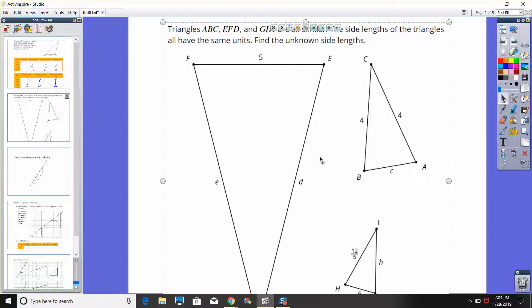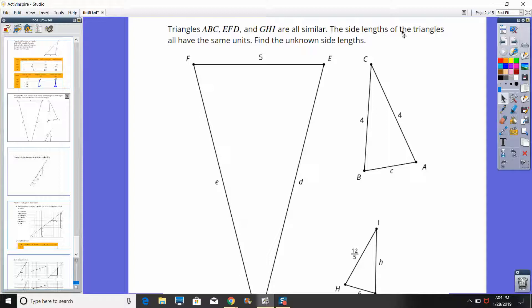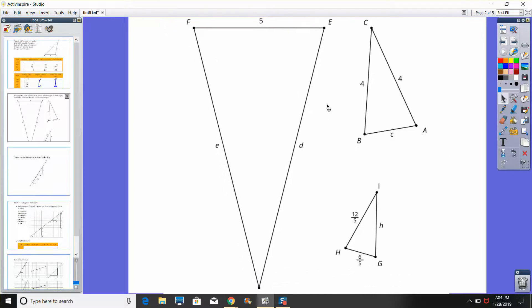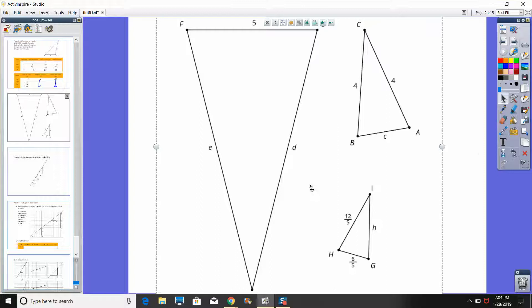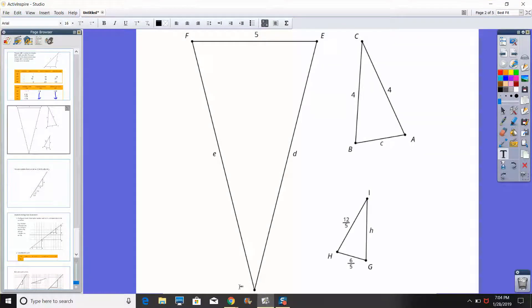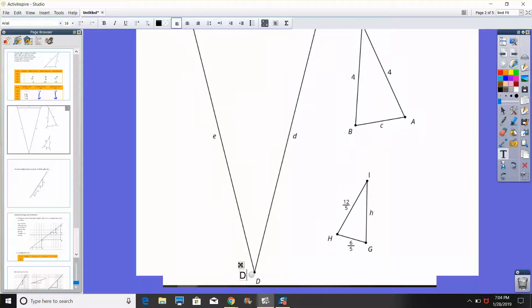Here's the directions. We have triangle ABC, EFD, and GHI, they're all similar. The side lengths of the triangles all have the same units and find the unknown side lengths. So this is a good practice problem and I actually did this with my students. Point D is kind of cut off on the bottom here. There's point D down here. I'll add that in right here.